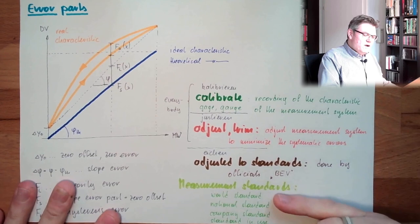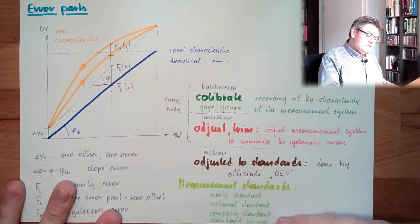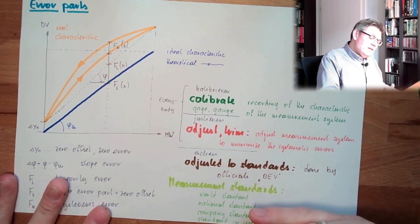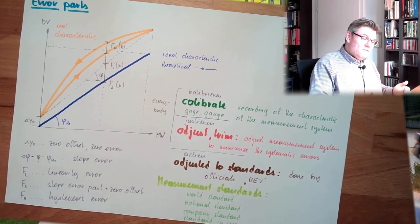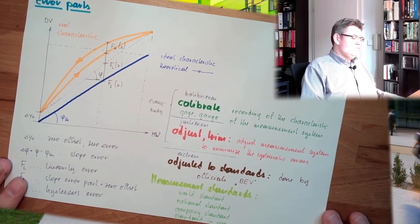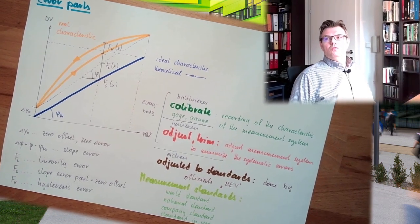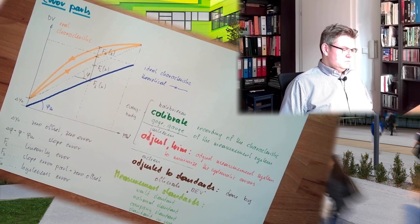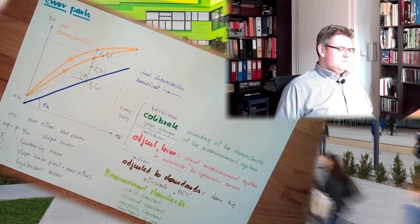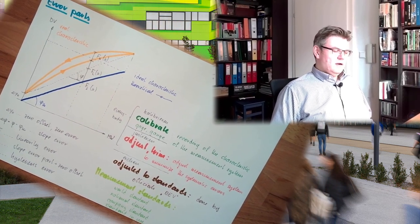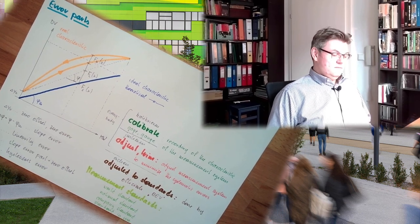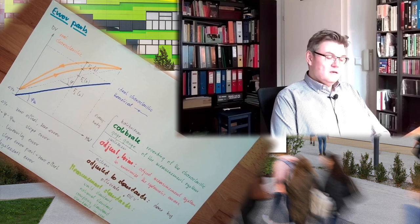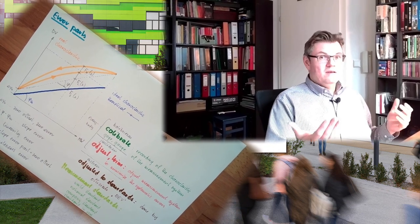So that's the hierarchy of measurement standards. Every lower level standard has to be approved against the higher level standard, and then you get a certificate and that's it. So these are the names we usually use: calibrieren, justieren, eichen, calibrate, adjust, trim, or adjust to standards. And then the measurement standards.